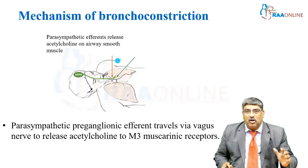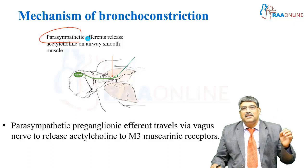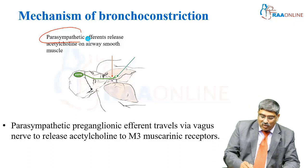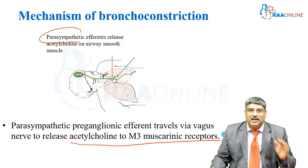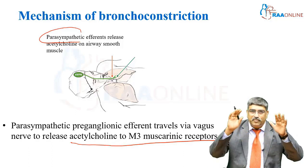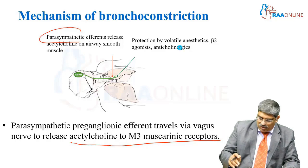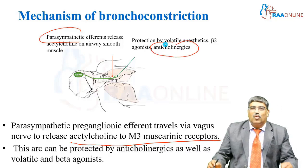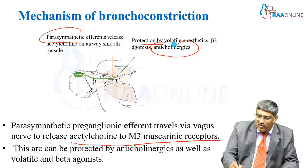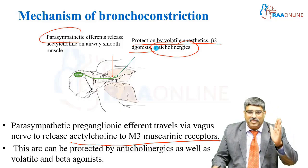Another important cause of bronchospasm is parasympathetic stimulation. The parasympathetic preganglionic fiber travels via the vagus nerve to release acetylcholine onto the muscarinic receptor. To counter this, you give anticholinergics mainly to overcome this reflex arc. Additionally, volatile agents and beta-2 agonists also break this parasympathetic pathway.